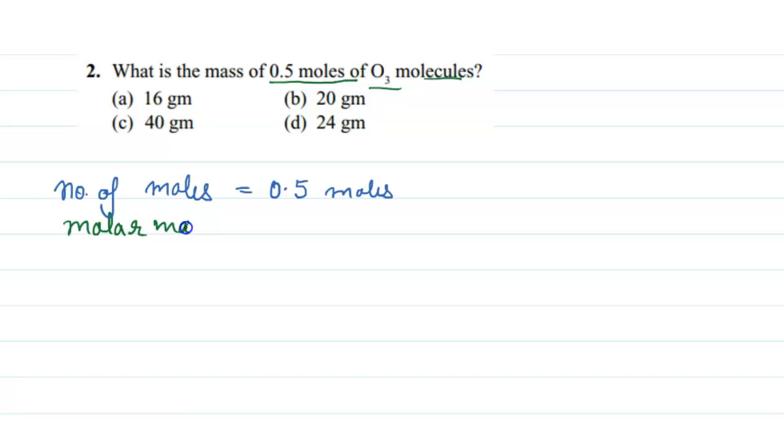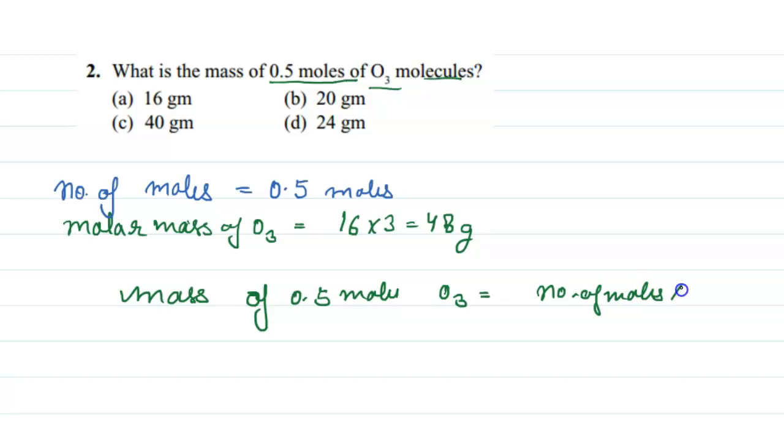The molar mass of O3 is equal to one atom of oxygen having mass 16, multiplied with 3, equals 48 grams. So the mass of 0.5 mole O3 is equal to number of moles multiplied with molar mass.